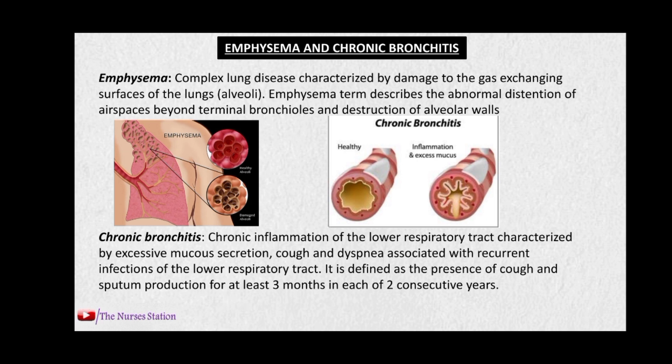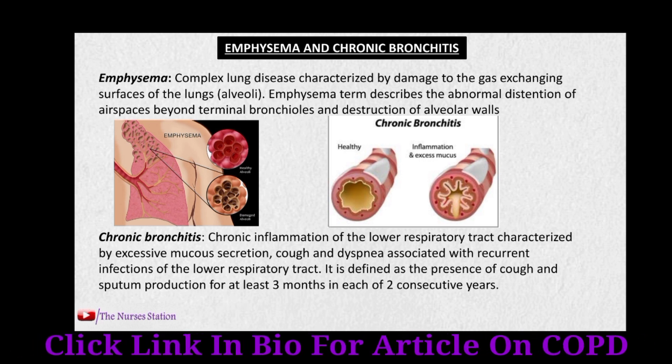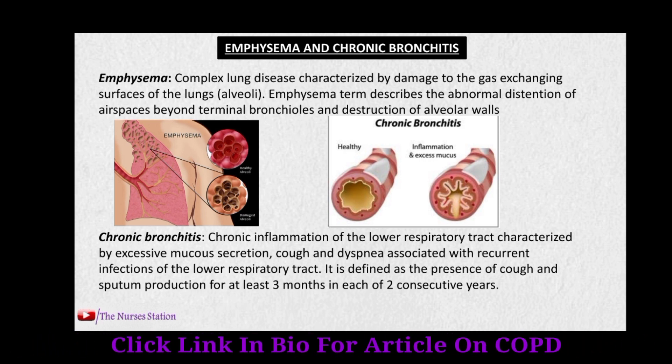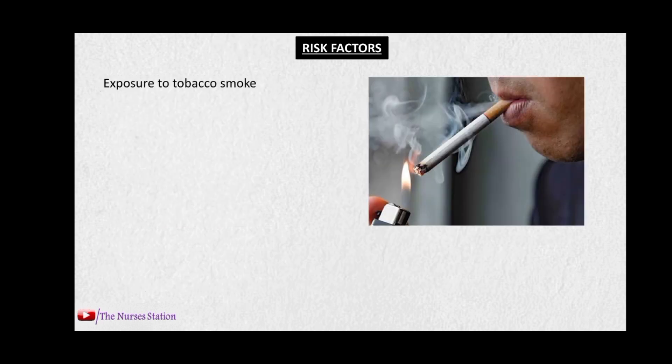In chronic bronchitis, there is chronic inflammation of the lower airways, excessive mucus production, cough, and labored breathing or dyspnea. Chronic bronchitis is defined as the presence of cough and sputum for at least three months in each of two consecutive years. The most important and major risk factor of COPD is exposure to tobacco smoke.